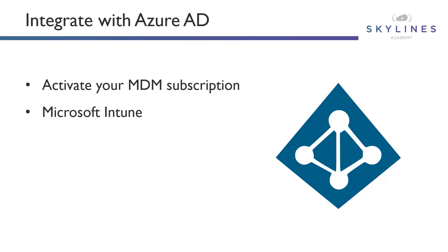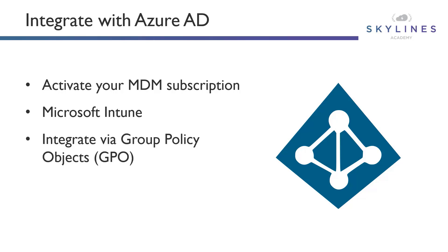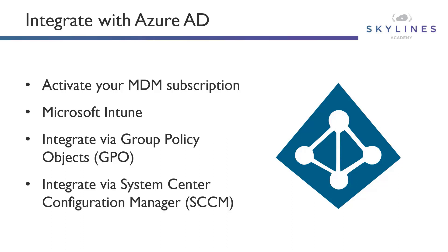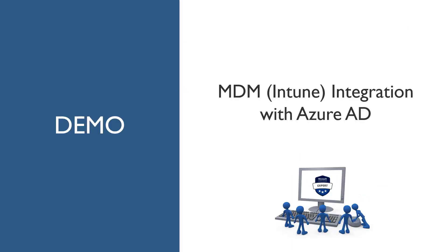Any modern management of devices will need to be domain-joined through Azure Active Directory. If you have on-premises Active Directory in your environment, you can set up what is called hybrid Azure AD domain join. You can also integrate management through Group Policy Objects, as well as integrating devices for authentication using SCCM.